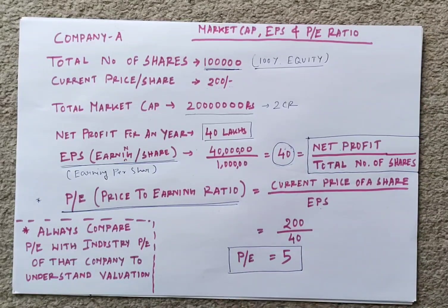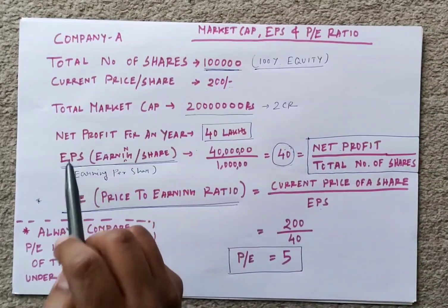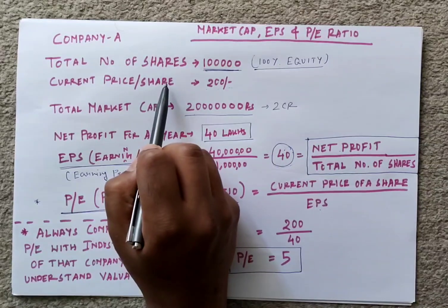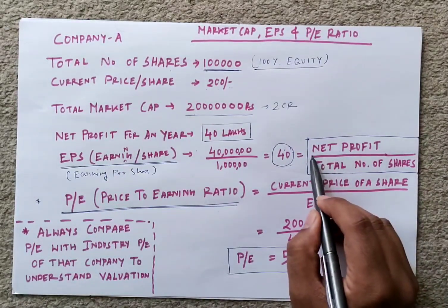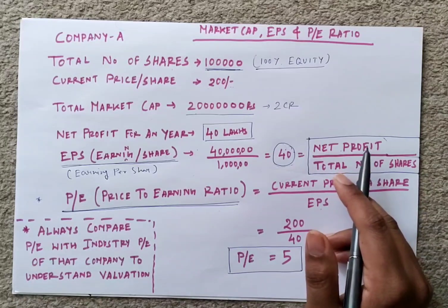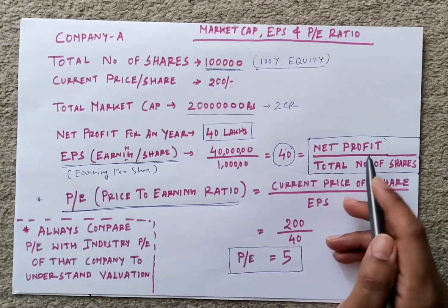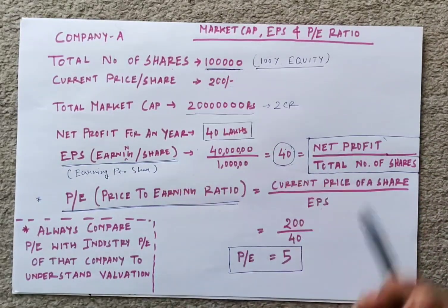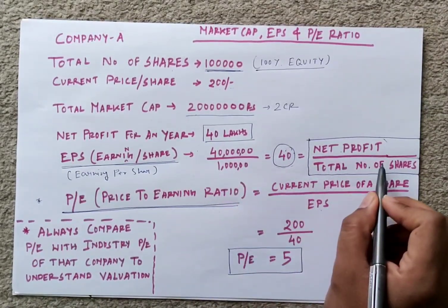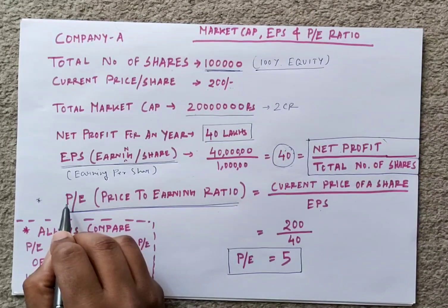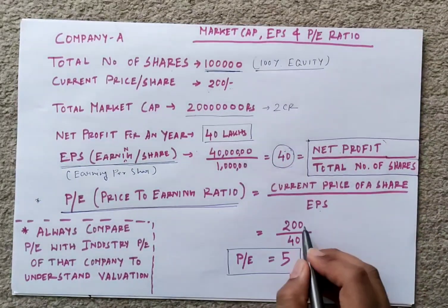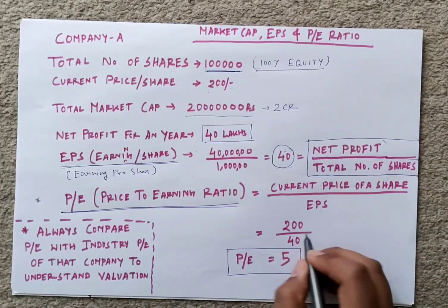Earnings per share is how much money you are making per share — that's why we divide net profit by total number of shares. Net profit is how much we are earning, and dividing by total shares gives us profit per share. To get the PE ratio, you take the current running price of the share, which is 200 rupees, and divide it by the EPS, which is 40, giving you a PE ratio of 5.